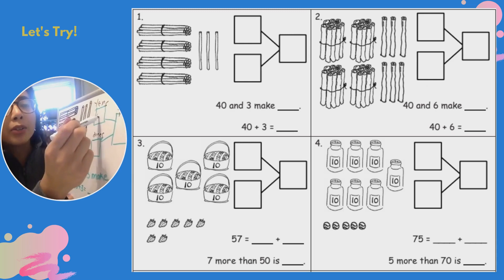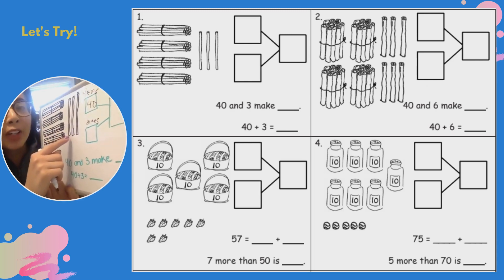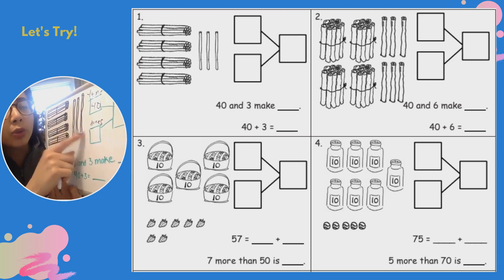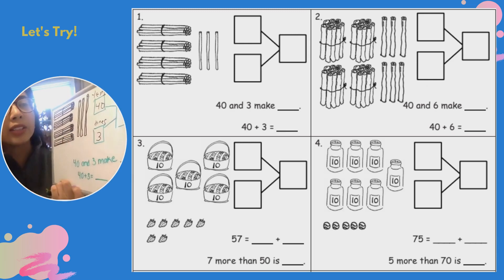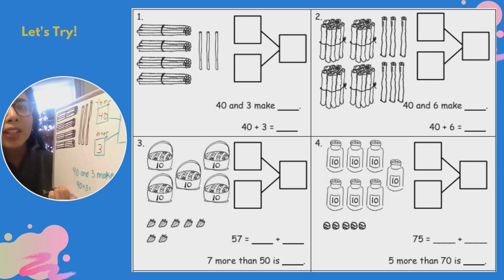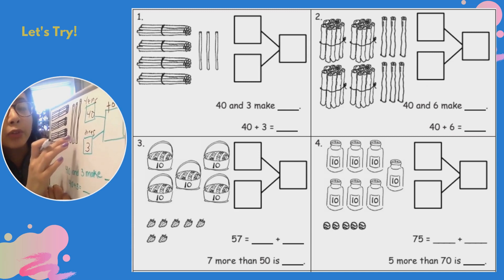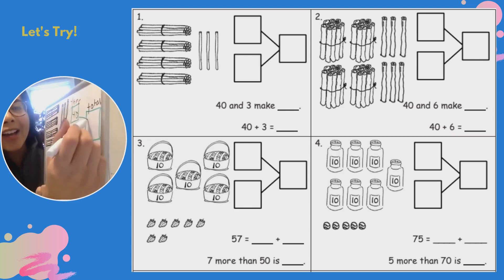And now we can write our loose ones. I have one, two, three, three ones. And my total should be, hmm, let's count one more time. 10, 20, 30, 40, 41, 42, 43. I have 43 as my total.